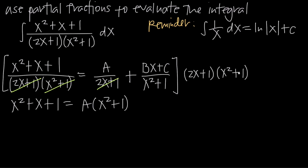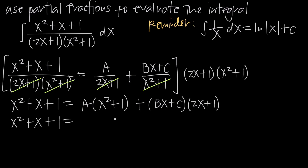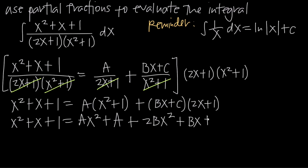Then when we multiply 2x plus 1 times x squared plus 1 by Bx plus C divided by x squared plus 1, we get x squared plus 1 to cancel, leaving us with just the factor of 2x plus 1. So we get plus Bx plus C — it's important to put parentheses around that — multiplied by 2x plus 1. Now we simplify the right-hand side by distributing A across x squared plus 1 to get Ax squared plus A, then FOIL out Bx plus C times 2x plus 1 to get 2Bx squared plus Bx plus 2Cx plus C.